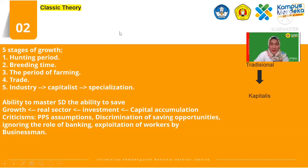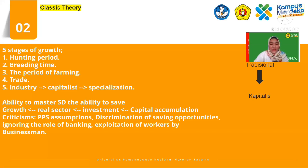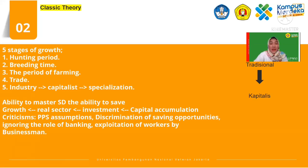This is about the classical theory — from Adam Smith or David Ricardo. There are five stages in the growth theory: number one is the hunting period, number two is the breeding time, number three is the period of farming, number four is about trade, and the last is about industry, capitalism, and specialization. For specialization, we have the ability to master human resources in the country, the ability to save growth like the real sector, and then investment and capital accumulation. This theory has the criticism that the assumption of the researchers cannot be fully counted, and how can we get the impact for researchers when we want to build our economic growth.